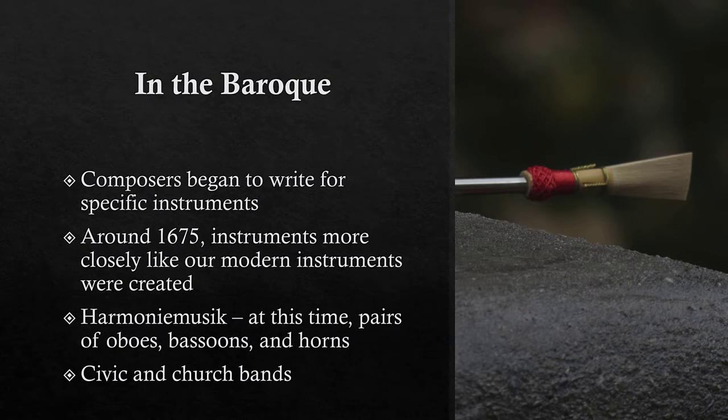At this time in the Baroque era, harmony music consisted of pairs of oboes, bassoons, and horns. That's actually a pretty cool, pretty full sound when you hear the music from that time. We also had instrumental music performing in things like civic bands and church bands.